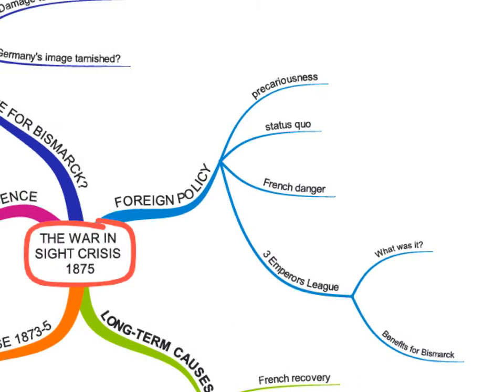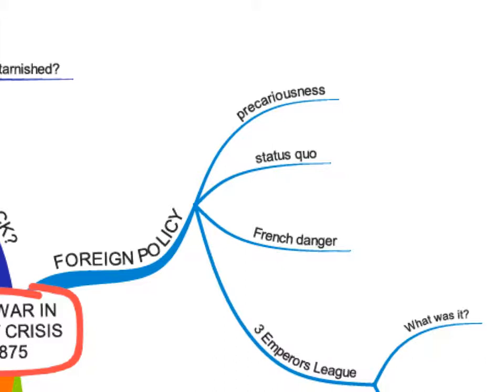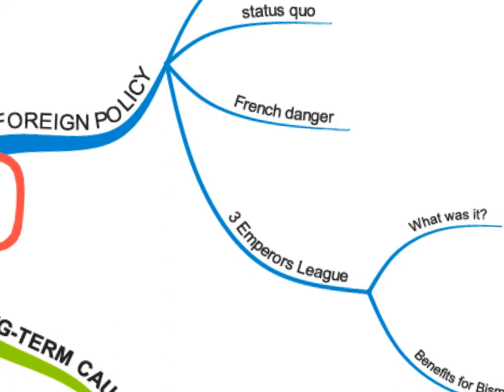Thinking in terms of the word 'precariousness' — referring to Bismarck's foreign policy position at the beginning of the 1870s — the concept of maintaining the status quo, the French danger, and then the Three Emperors League. We'll pick up those strands now.